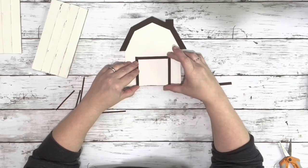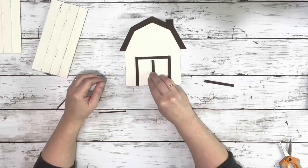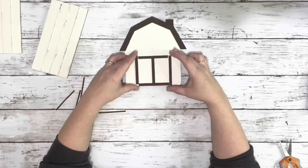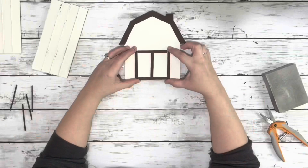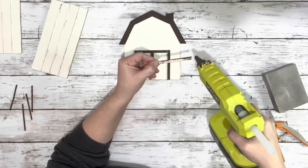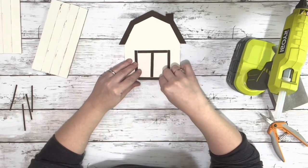Once all the pieces were dry, I took them and set them up first how I wanted them to go, starting with the door. Once I had them set up, I took a piece at a time and hot glued them down into place.